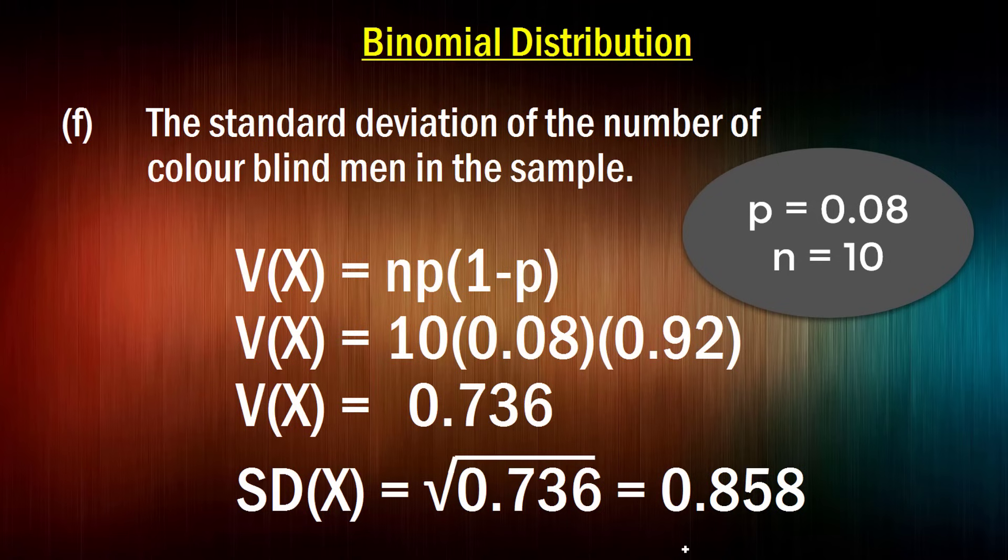What's the standard deviation of the number of colorblind men in the sample? Well, that utilizes this other feature of a binomial distribution, that the variance is equal to n times p times 1 minus p. And when you multiply all that together, you get 0.736. And then all we need to do is take the square root of that to get our standard deviation.